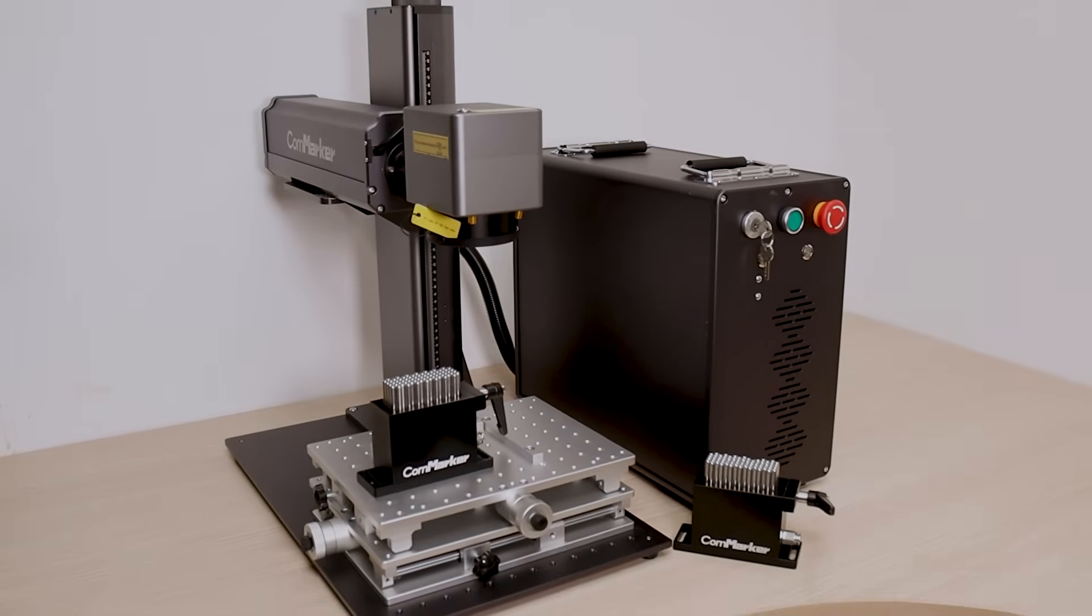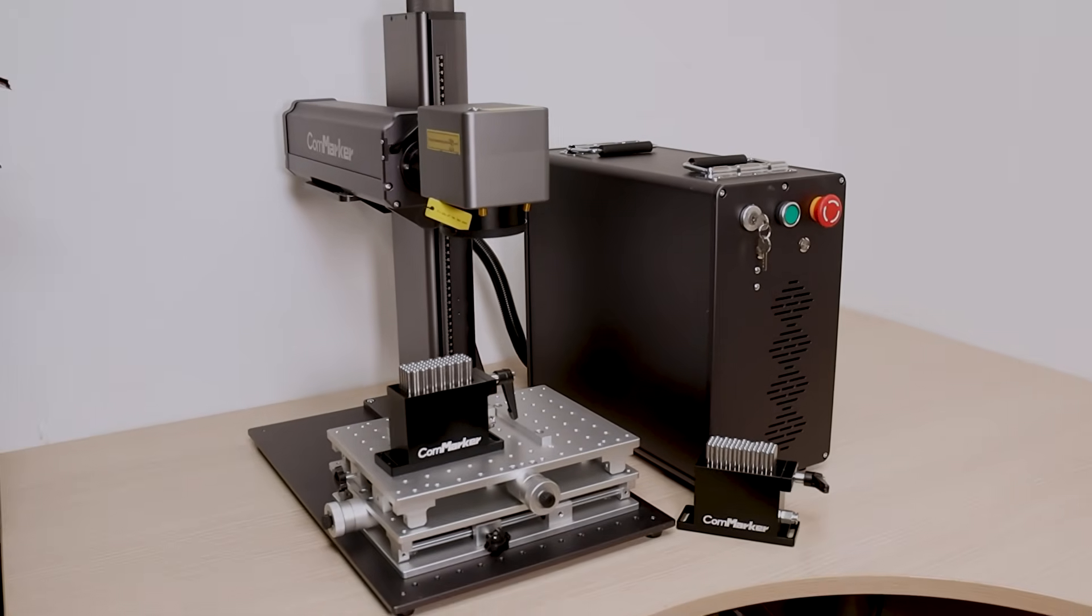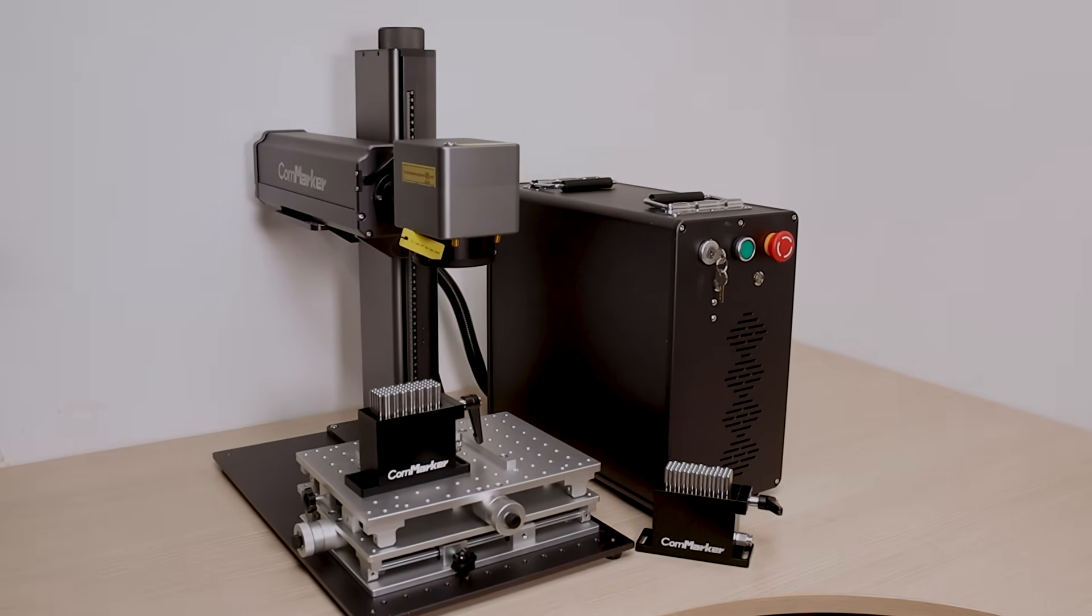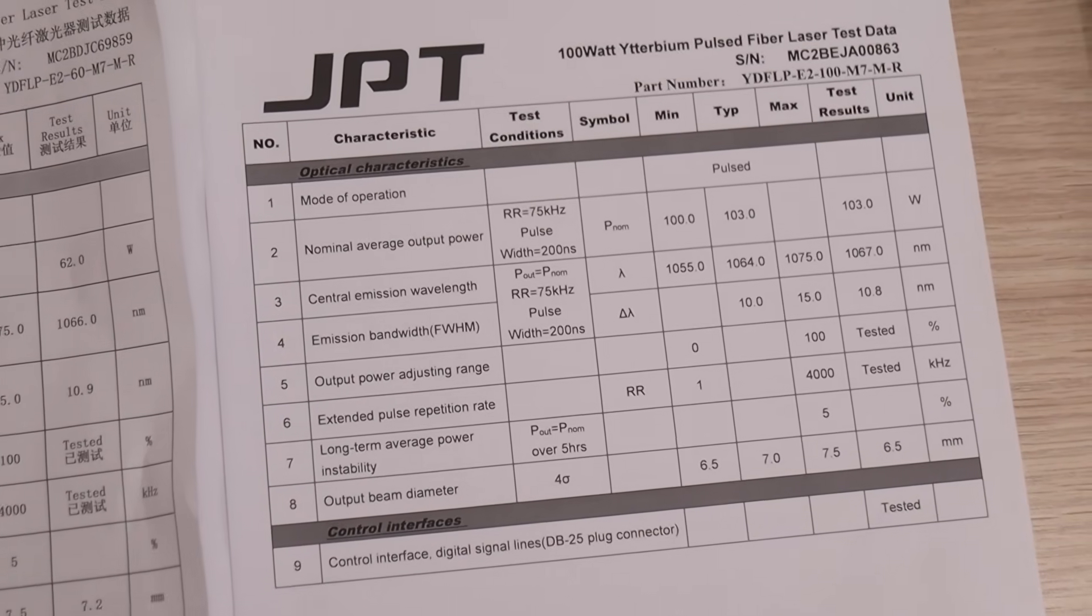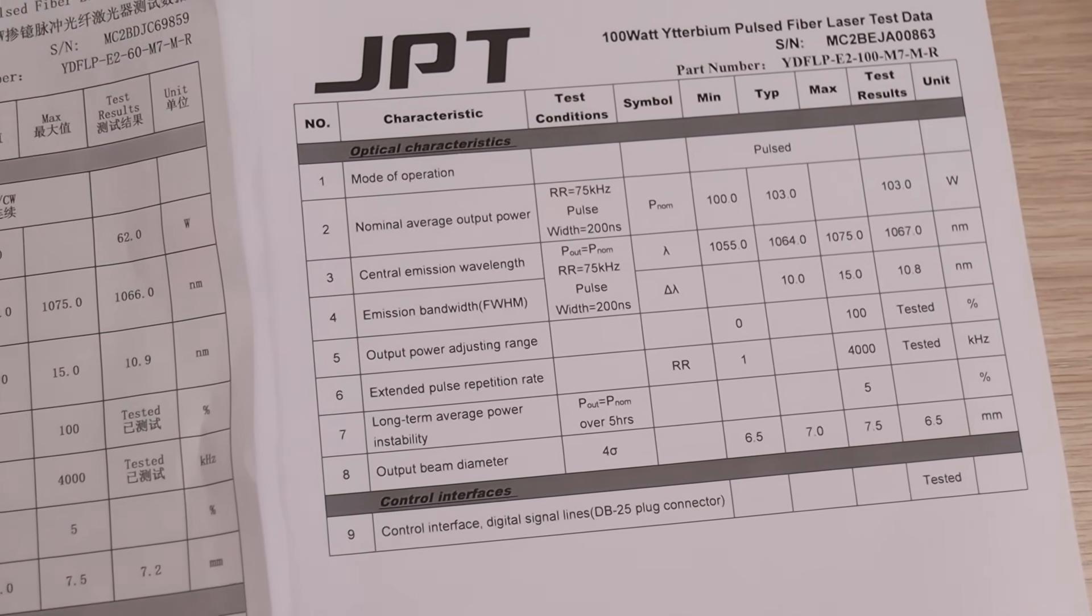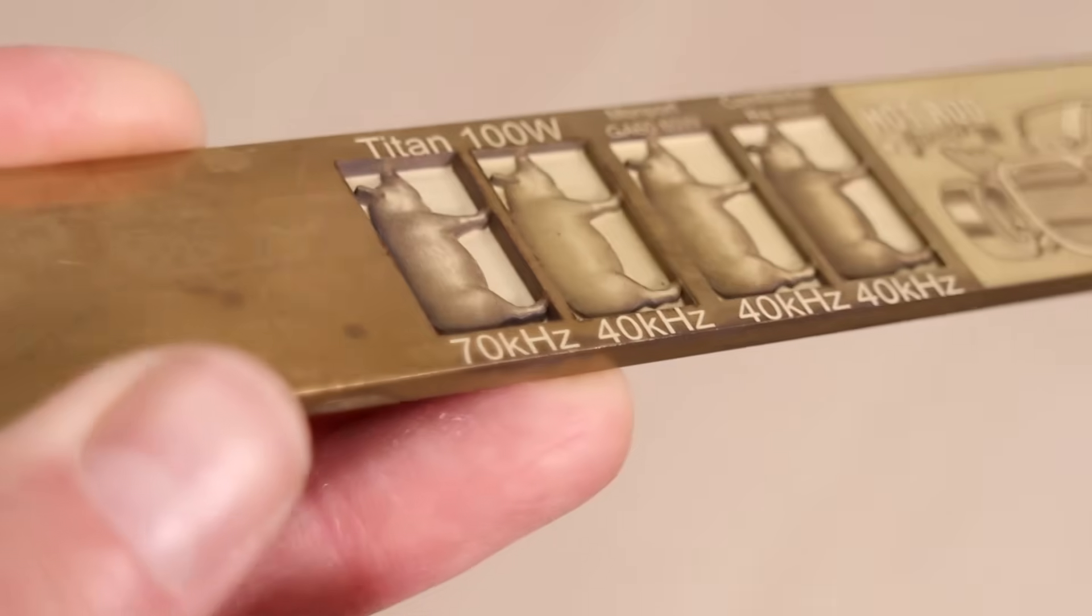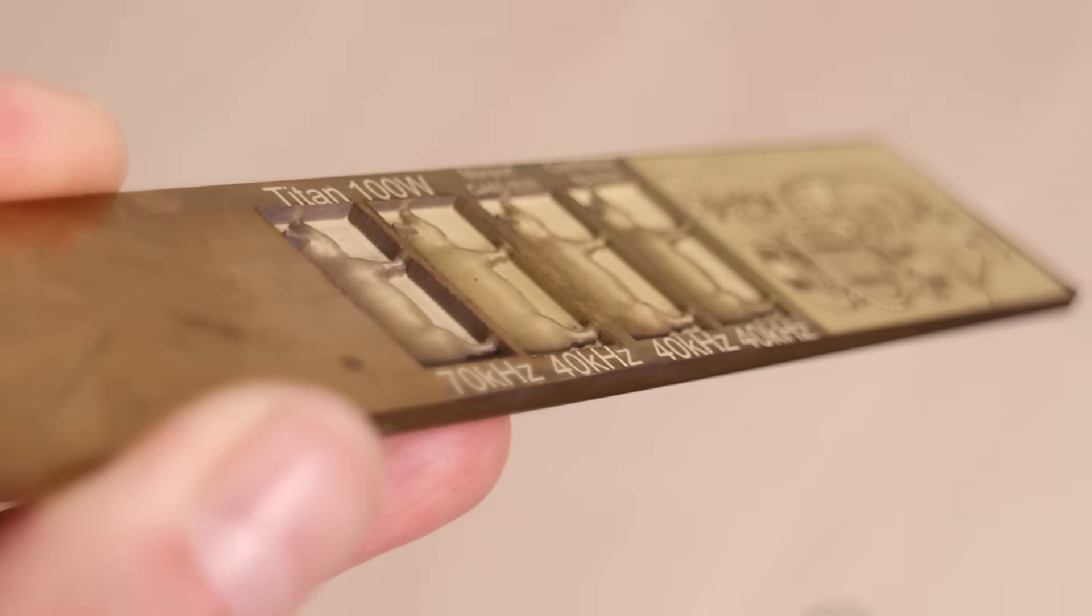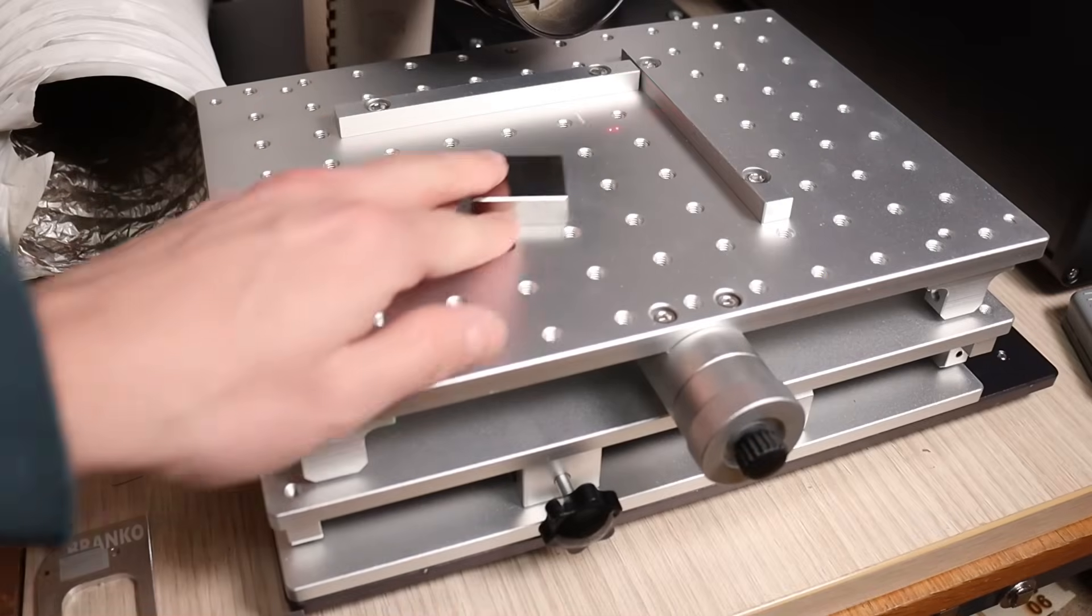For conclusion, we can safely say that the CommMarker Titan one is a serious laser engraver, capable to support a serious laser engraving business. It has a high-quality JPT laser source, which can engrave extremely fast and deep, and it supports all the high-volume production accessories.